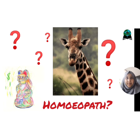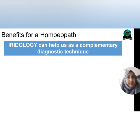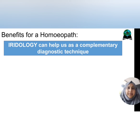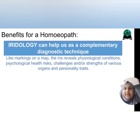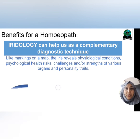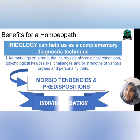Now you may ask, how can it help me as a homeopath? Iridology can help us as a complementary diagnostic tool which, like markings on a map, would help us to chalk out the various psychological health risks, physiological and functional derangements, and personality traits. This would point towards the morbid tendencies, functional predispositions and vulnerabilities, to understand the limits of tolerance of a person, which would in turn help us in individualization.